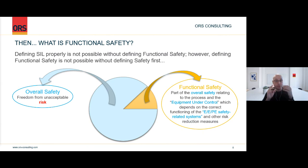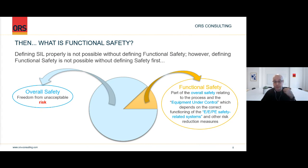Within overall safety lives process safety, occupational health and safety, and a part of this overall safety is called functional safety. This is the part of overall safety that relates to the equipment under control. It's the part depending on the correct functioning of electrical, electronic, programmable electronic safety-related systems and other risk reduction measures. What you need to take from that is essentially: equipment under control and E/E/PE safety-related systems — that's what functional safety is about.